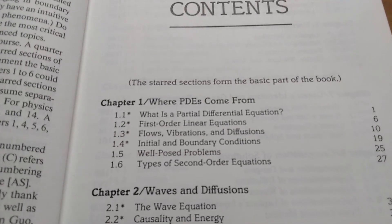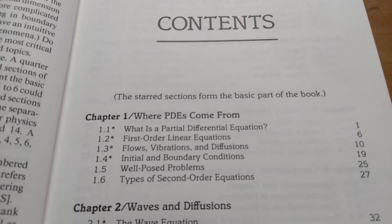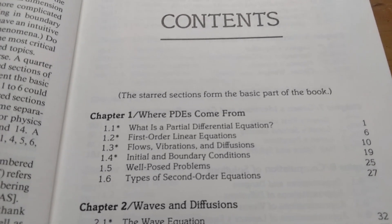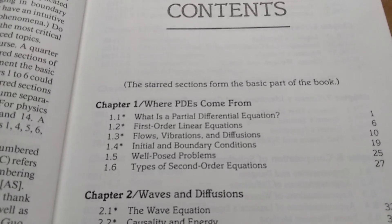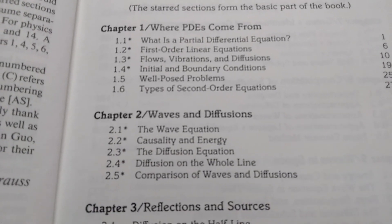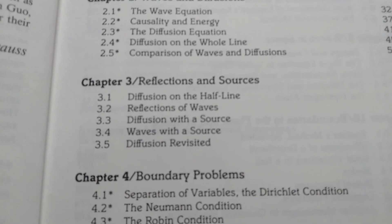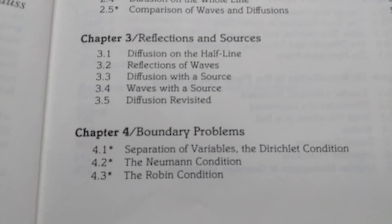So this is the table of contents. It says the starred sections form the basic part of the book. It starts off by describing where PDEs come from, then goes on to Waves and Diffusions, Reflections and Sources, and then Boundary Value Problems.